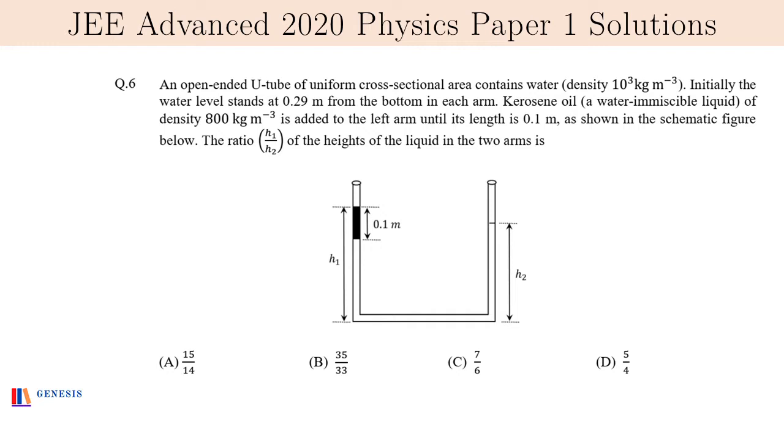In this question, there is an open-ended U-tube which was initially filled with water, and the water level was 0.29 meters on both sides. A little amount of kerosene oil having a length of 0.1 meters is poured onto the left arm, resulting in the water getting displaced. Now both arms have unequal column heights. Densities of water and kerosene are given to us. The question asks us to find the ratio h1 to h2. Four options are given to us.